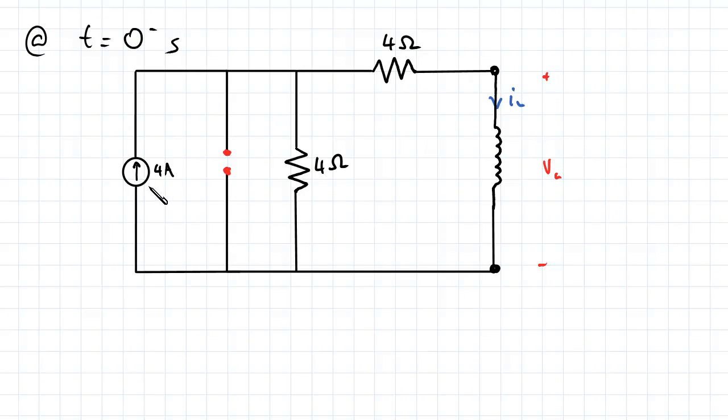And so therefore what we have is we have a 4-A current source flowing through these resistors and this inductor.